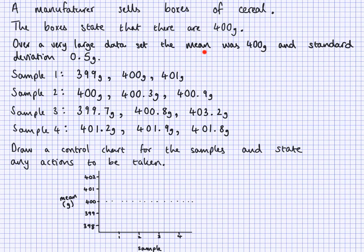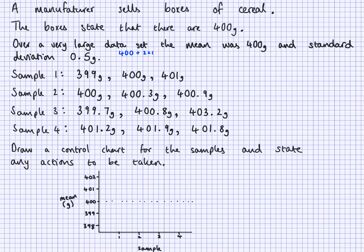When the mean is given, we need to work out the warning lines. When the median or range are given, the warning and action lines will be given to us — we just draw them in. When the mean and standard deviation are given, we need to work out the warning lines ourselves. So we do 400 plus and minus two standard deviations: 400 + 2×0.5 = 401, and 400 − 2×0.5 = 399. These will be our warning lines.